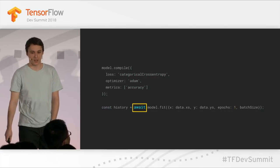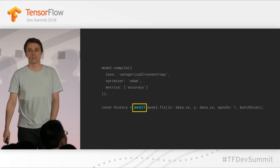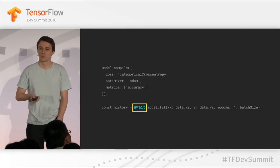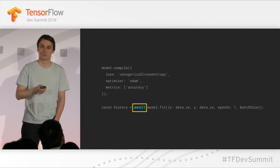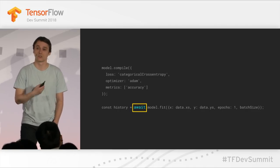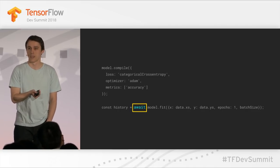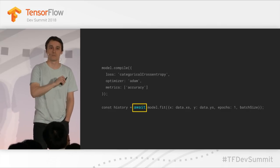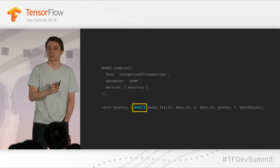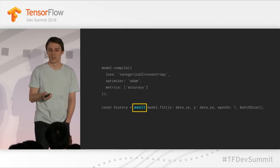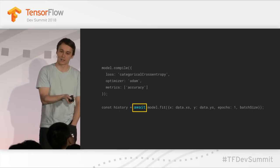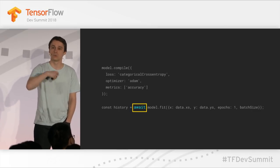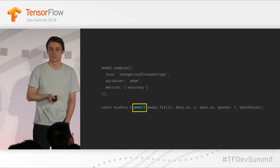I want to point out the await keyword here. model.fit is an asynchronous call — in practice, training can take about 30 or 40 seconds in a browser. In those 30 or 40 seconds, you don't want the main UI thread of the browser to be locked. This is why you get a callback with a history object after training is done, and in between, the GPU does the work.